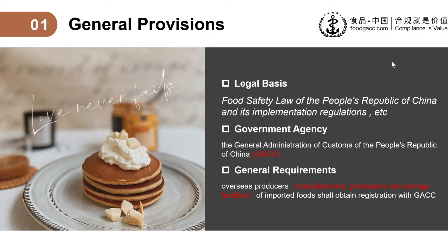In general, all overseas producers shall obtain registration with GACC. The overseas producers here include all facilities engaging in production, processing, and storage of food, but excluding food additives and food-related products.